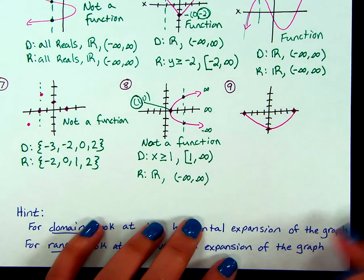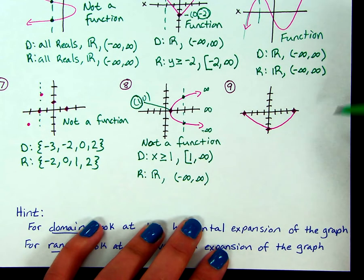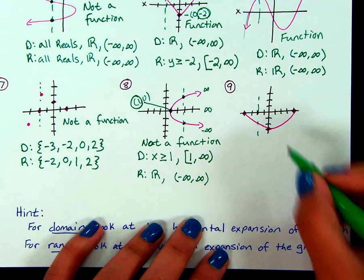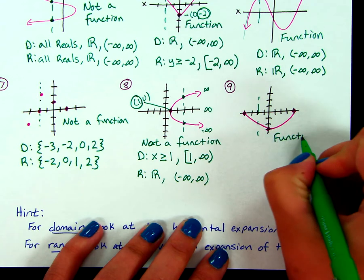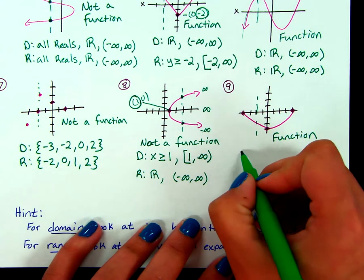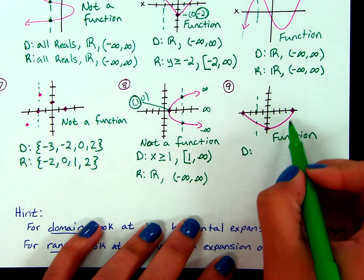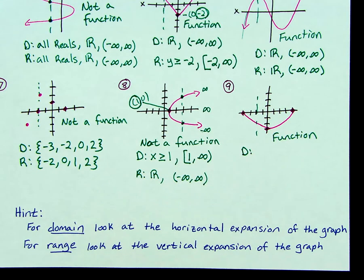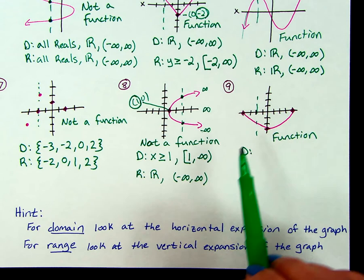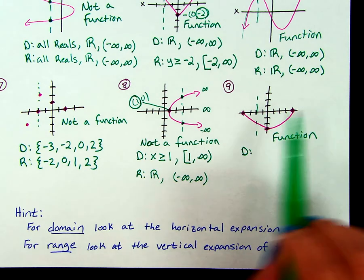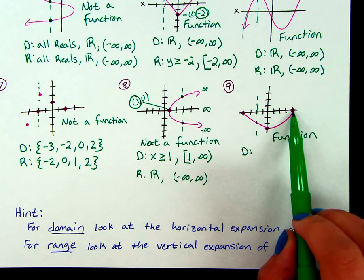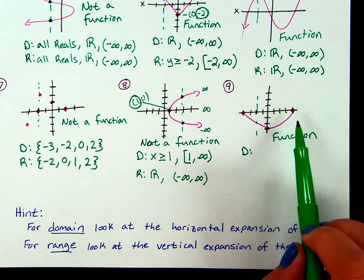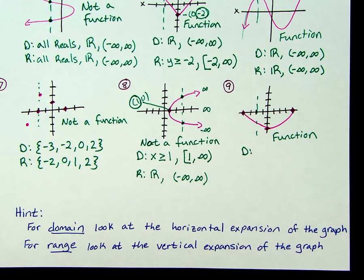Alright, last example for this set. Vertical line test — I'm trying to find a spot where I can go through more than once. But there's no spot that will go through more than once, so this is a function. For domain, because it is a continuous graph, we're dealing with inequalities. Looking at this, my graph doesn't expand in either direction — we have two stopping points on our x's.